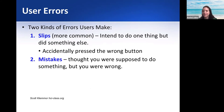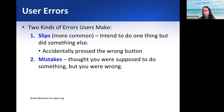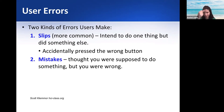Now there are two types of errors users can make: slips and mistakes. A slip is when you intend to do something but you do something else — like you wanted to maximize the window but hit minimize. You realize right away: 'oops, I hit the wrong button.' A mistake is different — you actually don't think you made a mistake. You think you did everything you were supposed to do, but something went wrong. It was designed in such a way that you really think you're doing something, but you're actually doing something else.